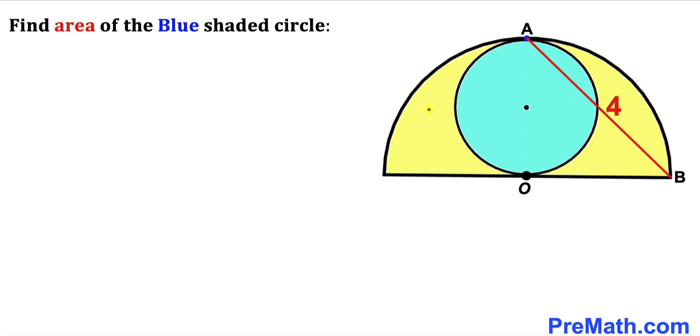Welcome to PreMath. In this video we have a blue circle inscribed in a semicircle as you can see in this diagram. Moreover, this chord AB is 4 units, and now we are going to calculate the area of this blue shaded circle.